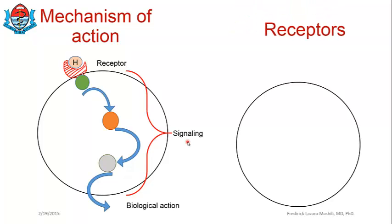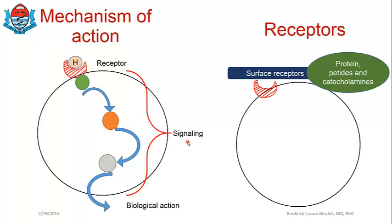So receptors — these are very important. When we are talking about hormones, receptors are very important, as you can see that a receptor has to be activated for the message carried by the hormone to bring its meaning. There are different types of receptors. First, we have surface receptors, and a good example of hormones that use surface receptors are protein hormones, peptides, and catecholamines — mainly because they are water-soluble and cannot cross the plasma membrane.